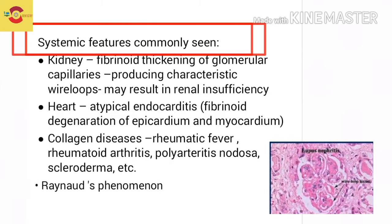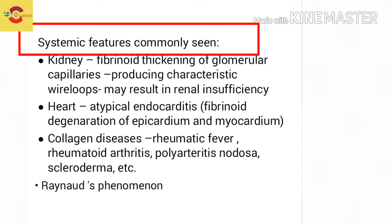Systemic features commonly involve the kidney, where fibrinoid thickening of the glomerular capillaries produces a characteristic wire loop appearance. In the heart, there is atypical endocarditis, which is the fibrinoid degeneration of the epicardium and the myocardium.